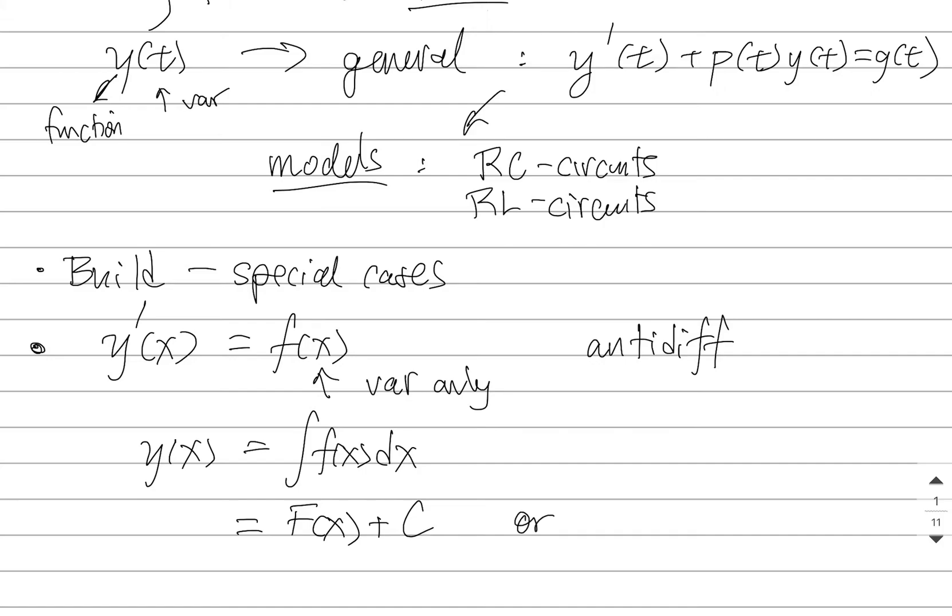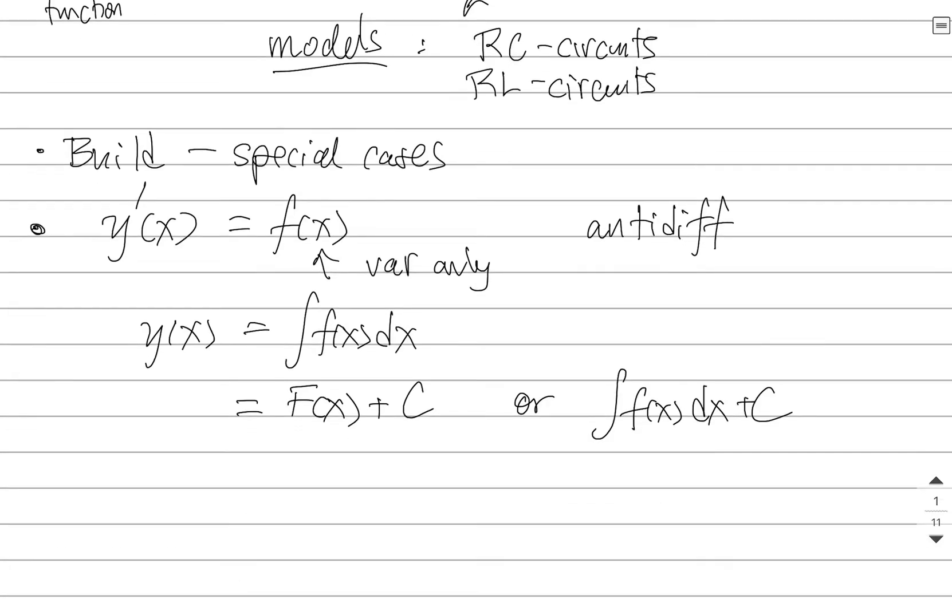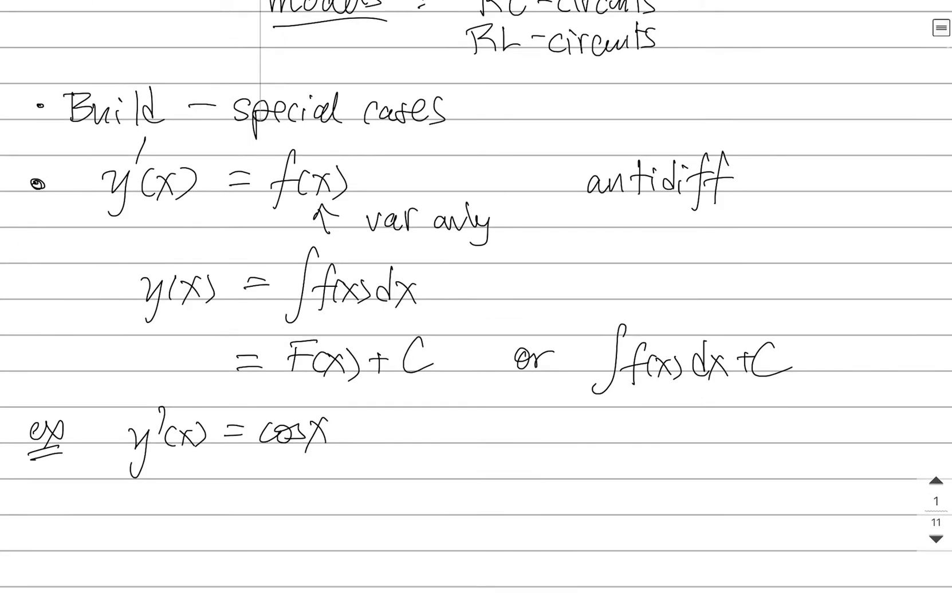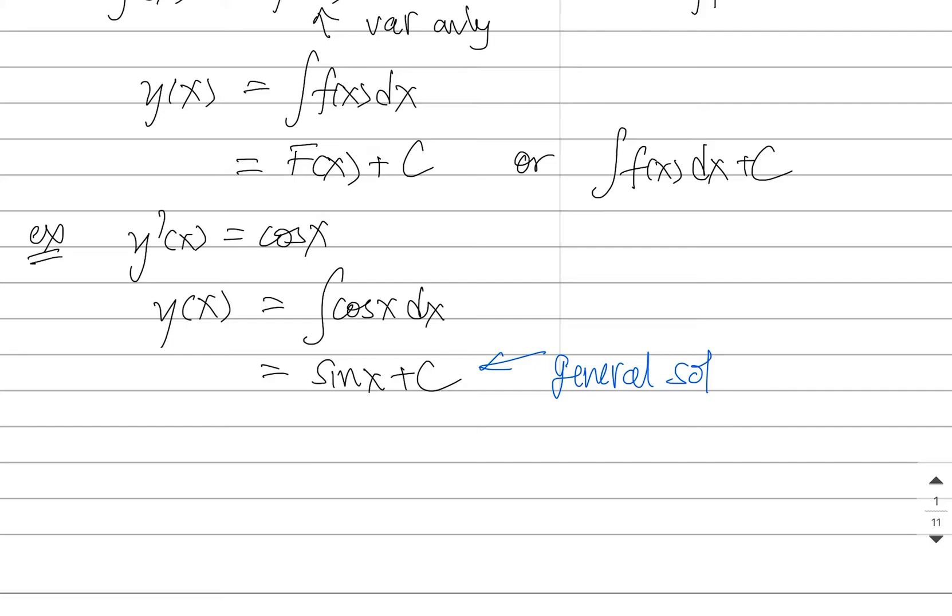We don't typically write it with that capital letter. We will just keep it as is like this. As a very simple example, let's say we wanted to solve y'(x) = cos(x). y(x) would simply be the anti-derivative of this, and you'd get sin(x) + C. This is what we call the general solution.